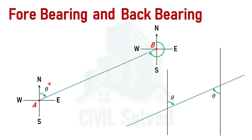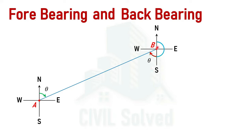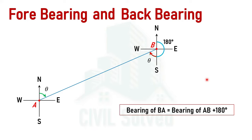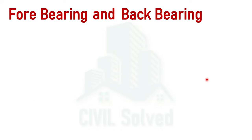Let's say the bearing of AB line is theta. Then the angle represented by the red line will also be theta. We know that the angle from north to south is 180 degrees. Therefore, the bearing of BA will simply be the bearing of AB plus 180 degrees. This is the case when the line AB lies in the northeast quadrant.